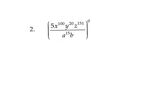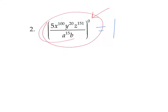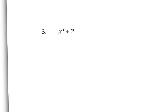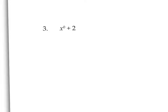On number 2, we have all of this huge fraction, but it's all being raised to the zero power. And yes, believe it or not, this all equals 1, because anything to the zero power equals 1. On number 3, we have x to the zero power — that equals 1 — and then we have the plus 2. Of course, 1 plus 2 equals 3.